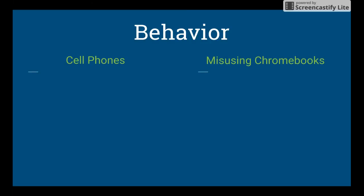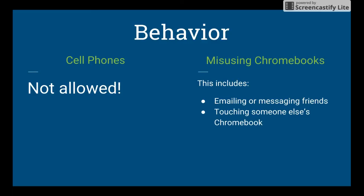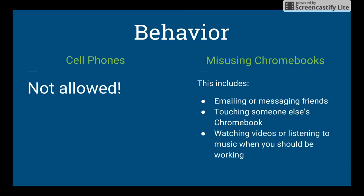Let's talk about behavior — two things. First, cell phones. They're not allowed in my classroom. There is no reason to ever have your cell phone out; we have Chromebooks. Second, misusing your Chromebook. Misusing includes emailing or messaging friends during class, touching someone else's Chromebook, and watching videos or listening to music when you should be working. Unless I give you permission to listen to music while working, you should be focused on your assignment.